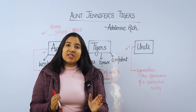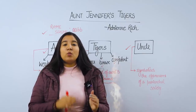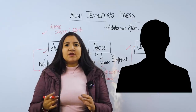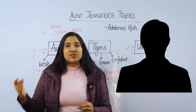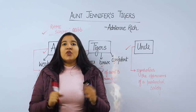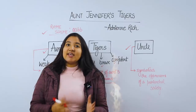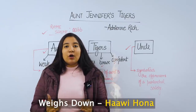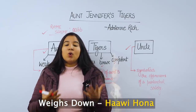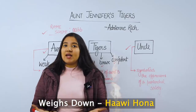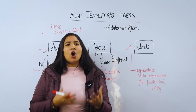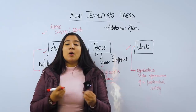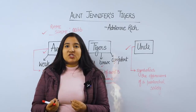Her wedding band is very heavy on her fingers. We know that Aunt Jennifer is very scared of her husband and she feels that he is her master. This wedding band symbolizes that Aunt Jennifer's marriage weighs down on her as a burden, making even basic work like knitting and weaving difficult to do.